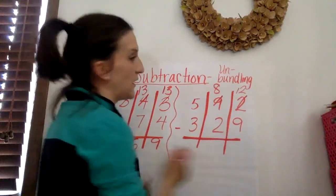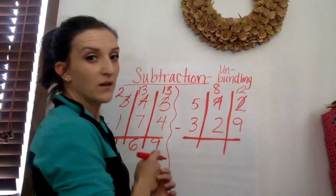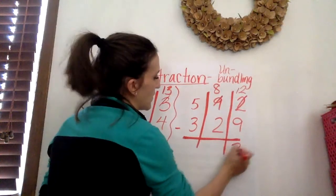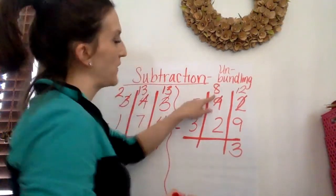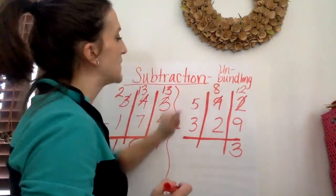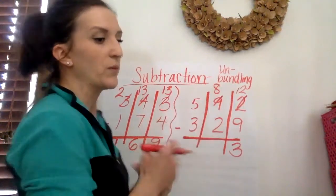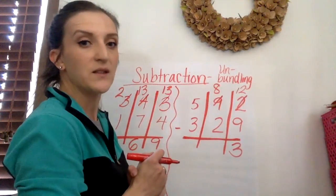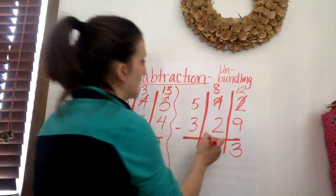So we have 12 minus 9. 12 minus 9 equals, can you help me out? You got it. It equals 3. Now in the tens place, I have 8 minus 2. Can you help me out? What's 8 minus 2? If you said 6, you're correct.